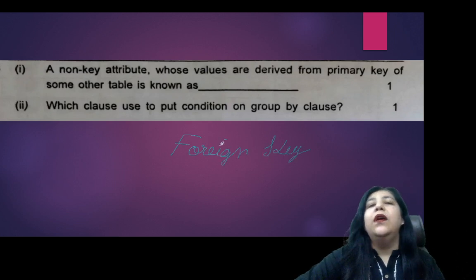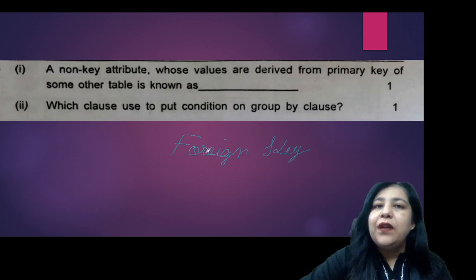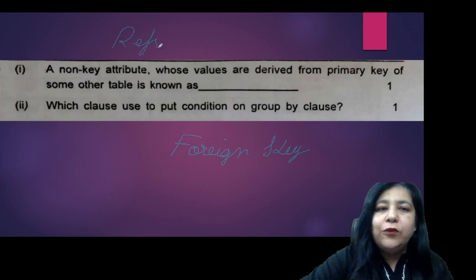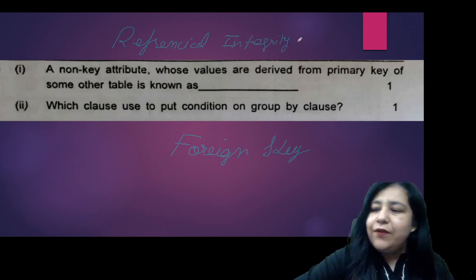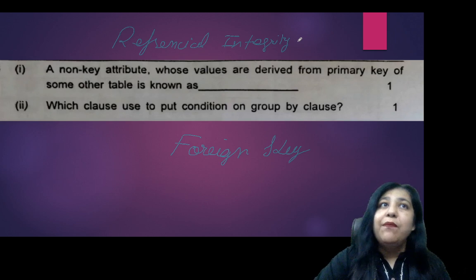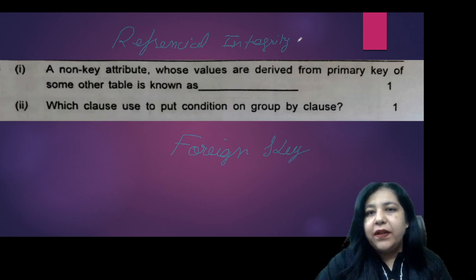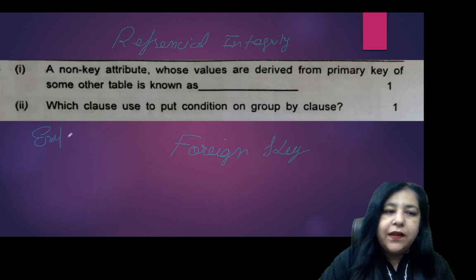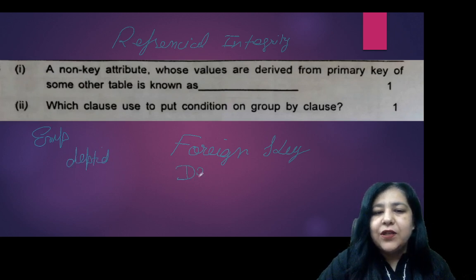Just like an employee and a department table, it is linked. In the employee table there is a column of dept ID, right? And a department table in which the dept ID is primary key.